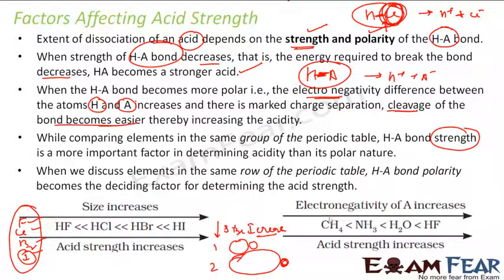When discussing elements in the same row of the periodic table, for example carbon, nitrogen, oxygen, fluorine, the size doesn't make much difference - it's almost the same. But the polarity has a huge impact. The electronegativity changes a lot, and that's why the electronegativity difference also changes a lot.